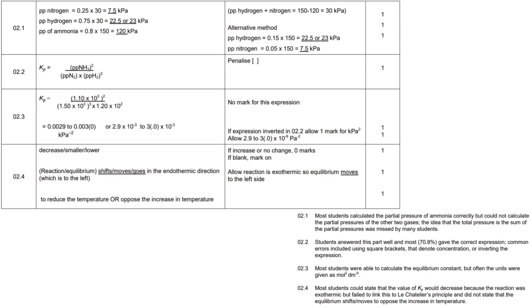So one thing I want to do is quickly look at the examiner's report. Specifically question 2.3 right here. You look at this quickly. It says most students were able to calculate the equilibrium constant. So we knew what the equilibrium constant was, our KP value, but often the units were given as mole squared per decimeter to the sixth. Now, I assume this is just a simple mistake carried over from KC. Just remember that KP is regarding pressures. It's nothing to do with concentrations. It's pressures of gases. So always, always, always put kilopascal. Now, next up in 2.4, most students could state the value of KP would decrease because the reaction was exothermic. That would be our one mark. However, they failed to link it to Le Chatelier's principle. It's always a mouthful. And did not state that the equilibrium shifts or moves to oppose the increase in temperature. So just remember that key point. This will always apply to equilibrium questions. So as long as you remember that, you should be fine.